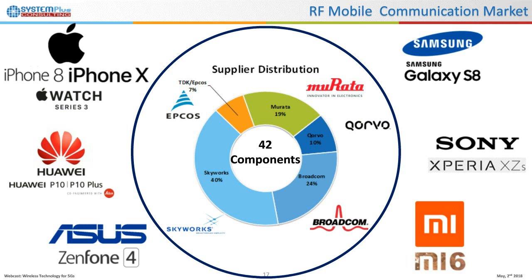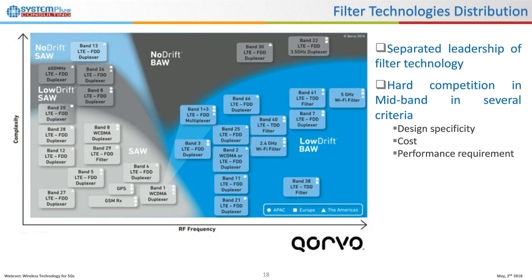To get an overview of the main supplier market share, we analyzed over 10 smartphones and smartwatches front-end modules comprising over 14 components. It is revealed that Skyworks seems to get the higher design wins in the smartphone industry, from high-end to low-end, followed by Broadcom, Murata, Qorvo, and TDK. All front-end modules analyzed show two kinds of integrated filter technology for sub-GHz communication.